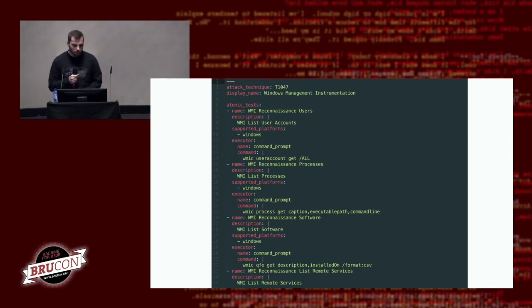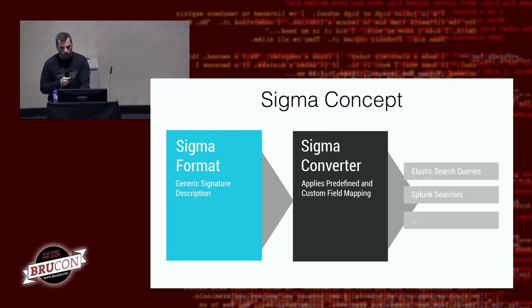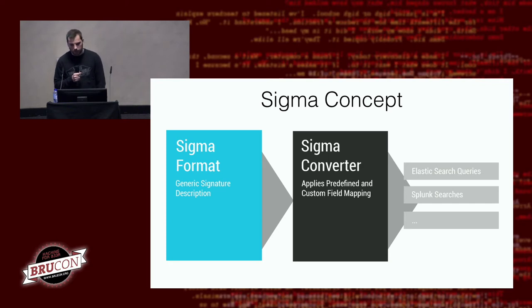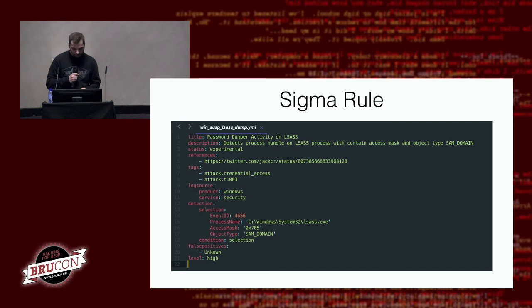Once we are able to emulate the adversary, we want to detect it. For detection we decided to use the Sigma format. Sigma is a generic signature format for SIEM systems and is getting really popular. The concept is simple: there is a Sigma format in which you write rules, and there is a Sigma converter which converts those rules into queries for multiple search systems like Elasticsearch, Splunk, QRadar, and ArcSight. A rule contains a simple description, tagging for the MITRE ATT&CK matrix, and conditions which must match for the rule to trigger on a specific event.